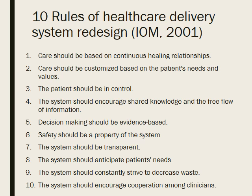The system should anticipate patient needs — it should be proactive, not reactive. The system should constantly strive to decrease waste, not wasting resources or patients' time. And finally, the healthcare system should encourage cooperation among clinicians — clinicians and institutions should actively collaborate and communicate to ensure patients receive appropriate care. These rules came out in 2001, so it's been 16 years. When I look at these rules, it seems we still have quite a long ways to go.